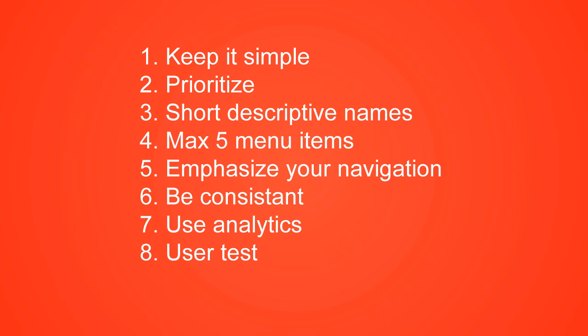Number two: prioritize. There are tools and a discovery phase in user experience that will tell you which menu items to prioritize — which items go first, which are second, and so on. Think carefully about this ordering. Number three: use short, descriptive names. It's always great to keep names short and descriptive so people get a clear sense of what they'll find when they click a menu item.